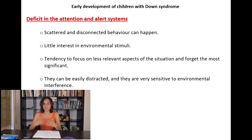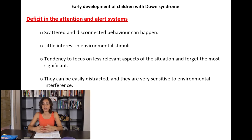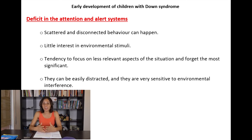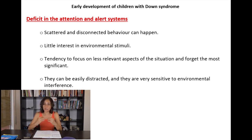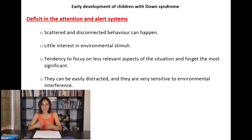Another alteration that can happen in Down syndrome is a deficit in attention and the alert system. Scattered and disconnected behavior can happen — behavior not directed to a specific objective. There is also little interest in environmental stimuli, a tendency to focus on less relevant aspects of the situation, and as a result they can be easily distracted and are very sensitive to environmental interference.